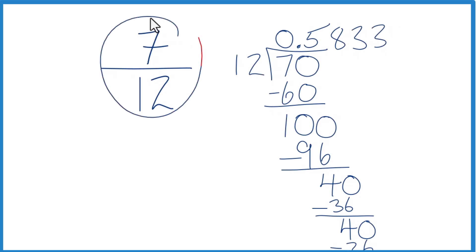When we write the fraction 7 twelfths as a decimal, we get 0.5833 and the 3s keep repeating. We could write that as 0.583 with a bar over the 3 to show that it keeps repeating.